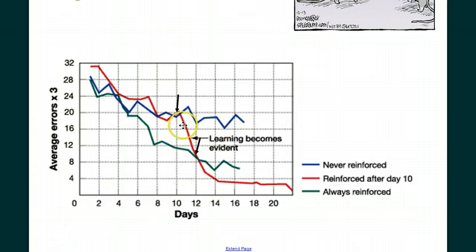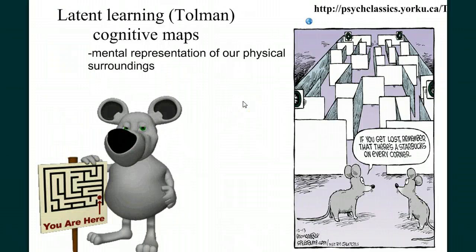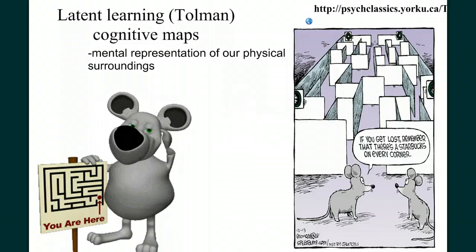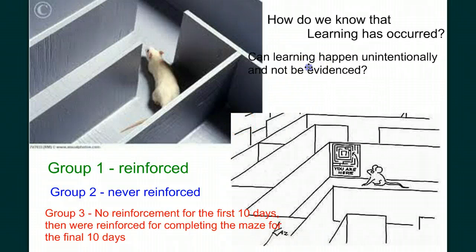What does this tell us? How can they make up this much ground in such a short amount of time? It shows us that the rats were learning in these early stages when there was no reinforcement — they just had no reason to evidence that learning. We call this kind of learning latent learning. Tolman suggested that mere exposure to the maze allowed the rats to build a cognitive map that they later used to more quickly solve the maze. A cognitive map is a mental representation of our physical surroundings. We build cognitive maps all the time; it's what allows us to move around our house in the dark and not bump into things. Through his experiment, Tolman exhibited that learning can happen passively, without us knowing it — this learning has just not been evidenced yet.